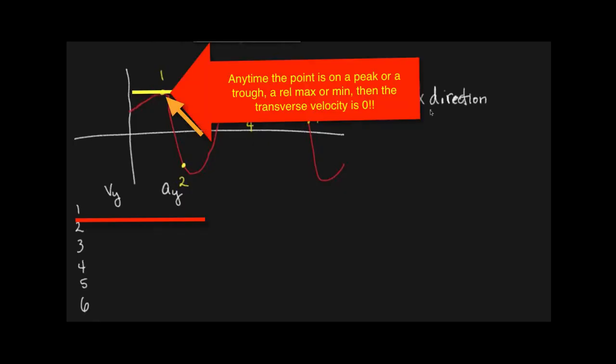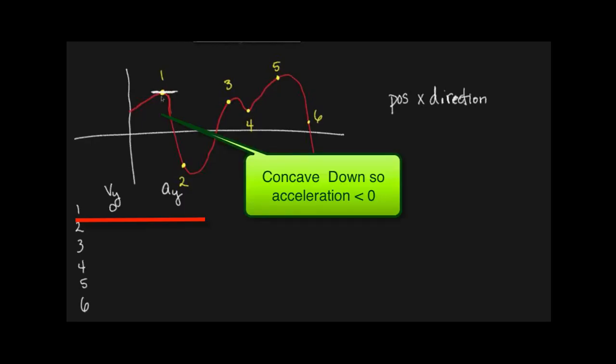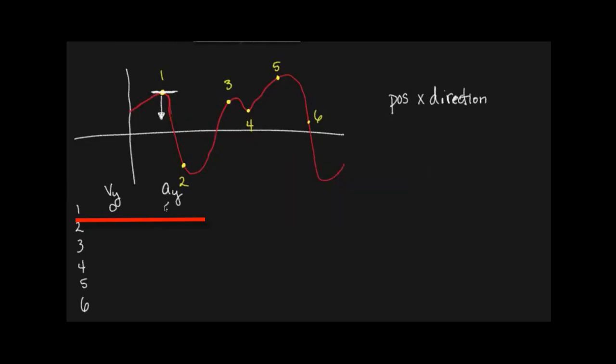You're on a zero slope, so velocity is zero. Very good, because that's right at the very peak. We know it's going to be zero. A sub y - the easiest way to look at it is just look at the concavity. It's concave down, so it's negative. The acceleration is that way, less than zero.